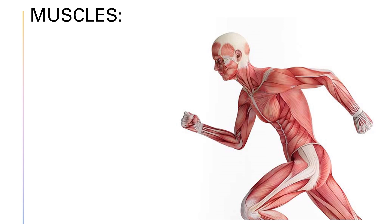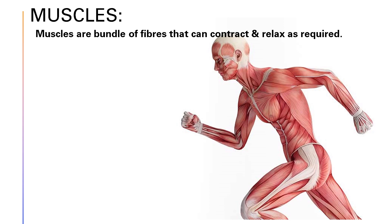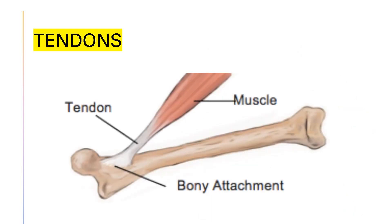So what are muscles? Muscles are bundles of fibers that can contract and relax as required. Muscles are firmly attached to bones by means of tendons. When muscles contract, there is movement at the joint, and bones move either nearer or away from each other. The action of muscles is necessary for all kinds of movements, from the small movements of eyelids to those that demand great strength when chopping wood with an axe.